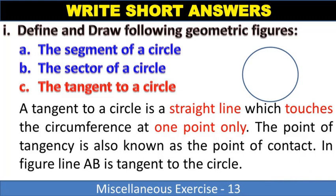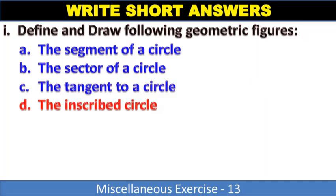Tangent to a circle: A tangent to a circle is a straight line which touches the circumference at one point only. The point of tangency is also known as the point of contact. In the figure, line AB is tangent to the circle. When you learn tangent, also learn secant. Secant cuts the circle at two points.